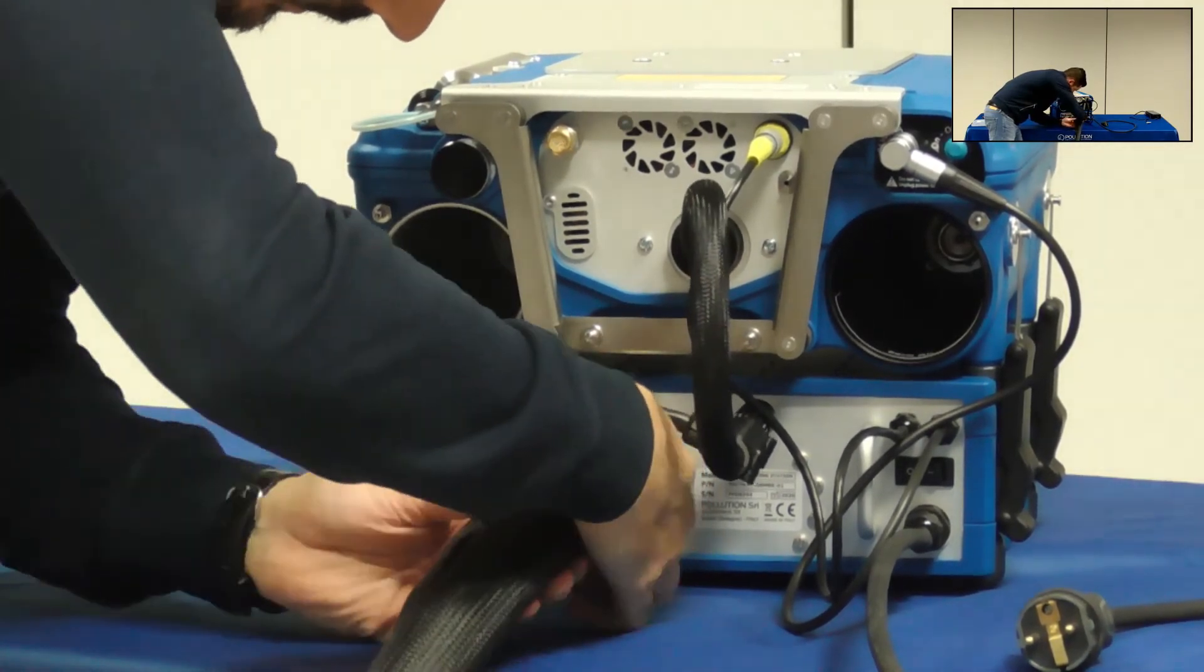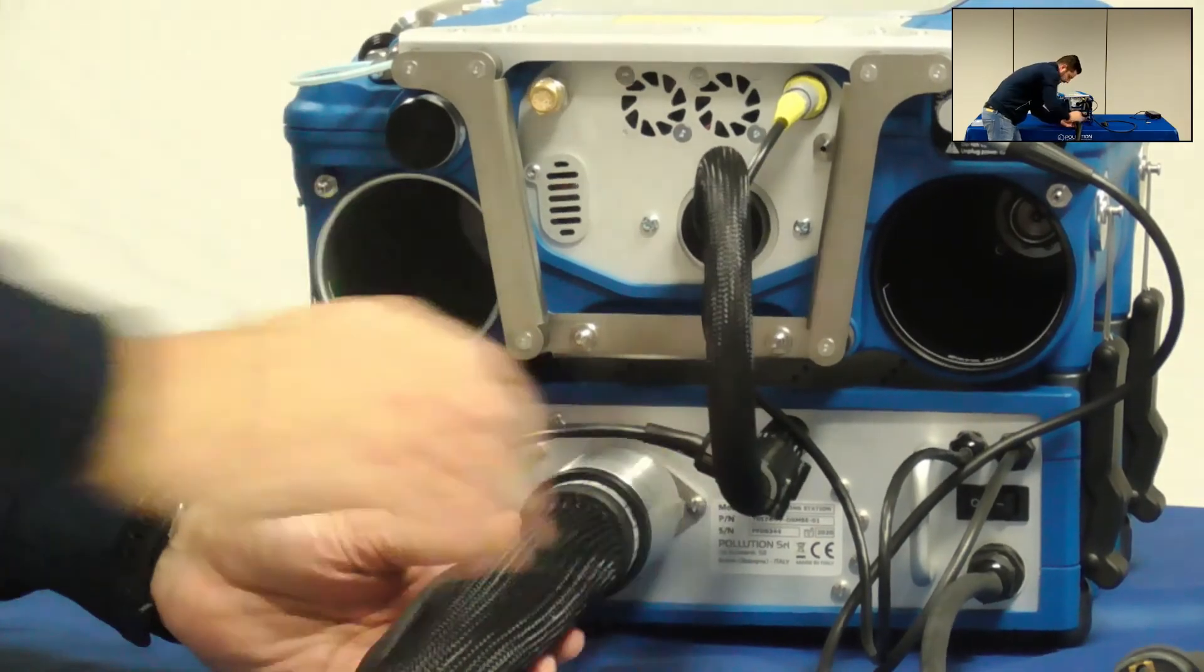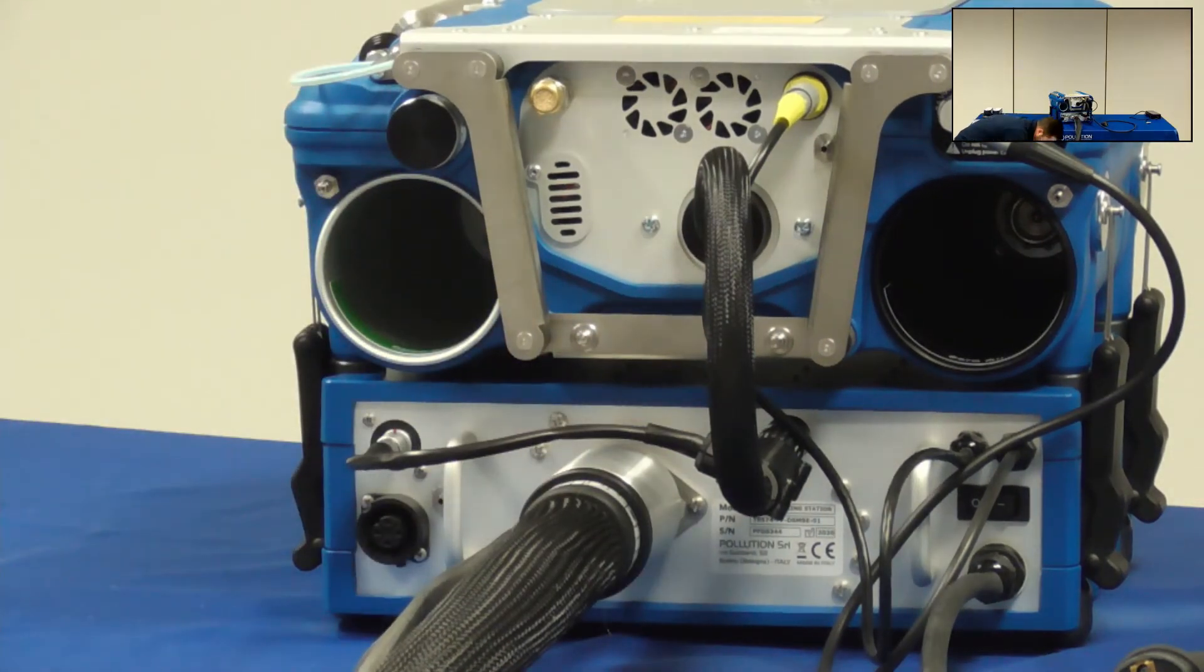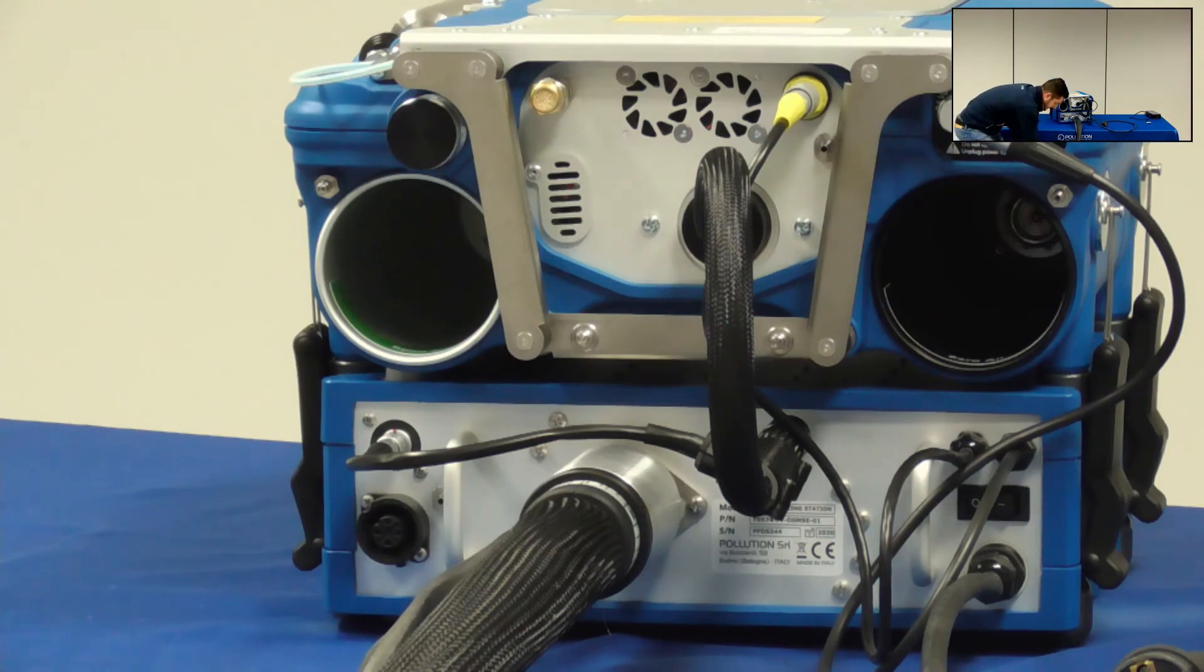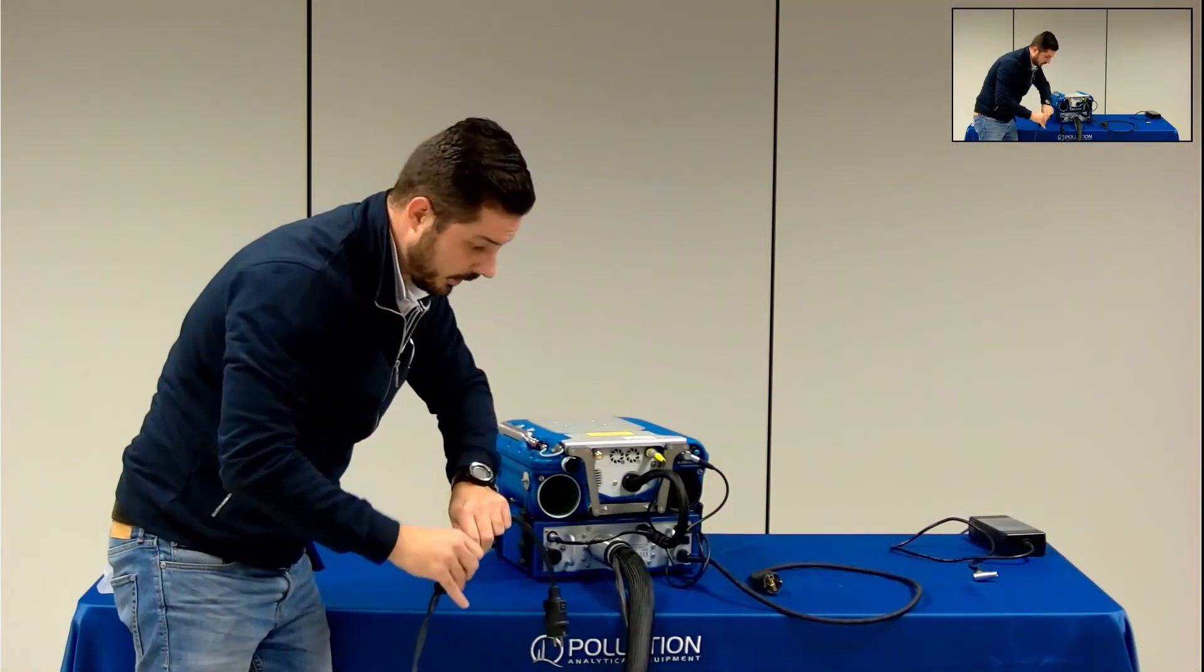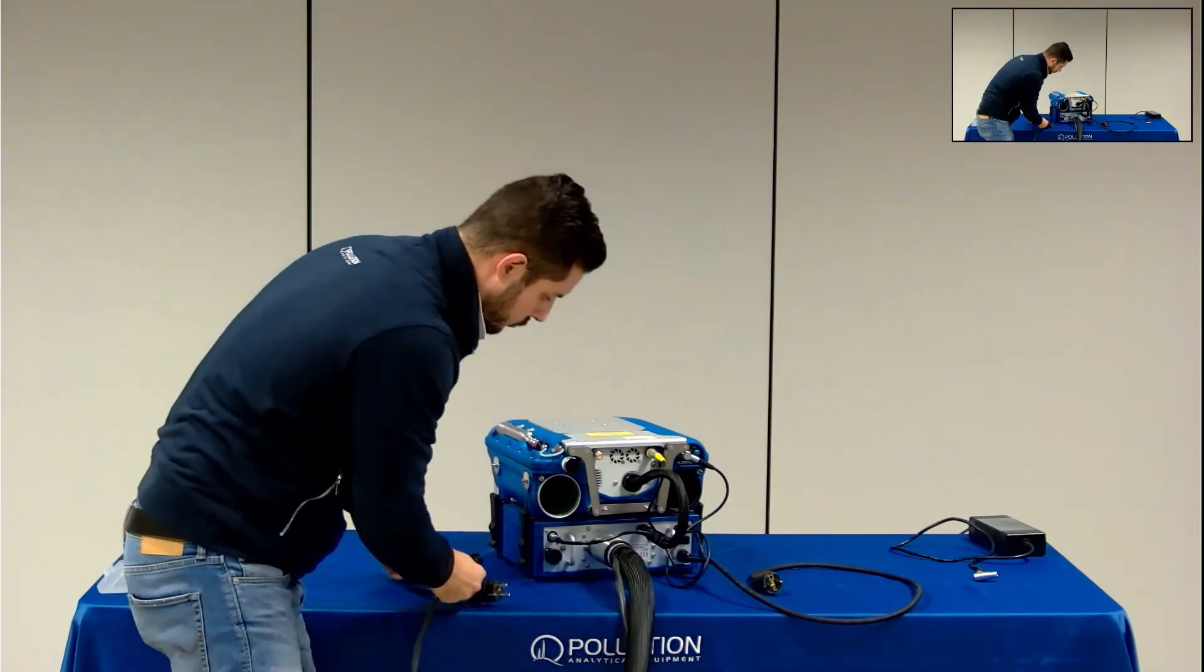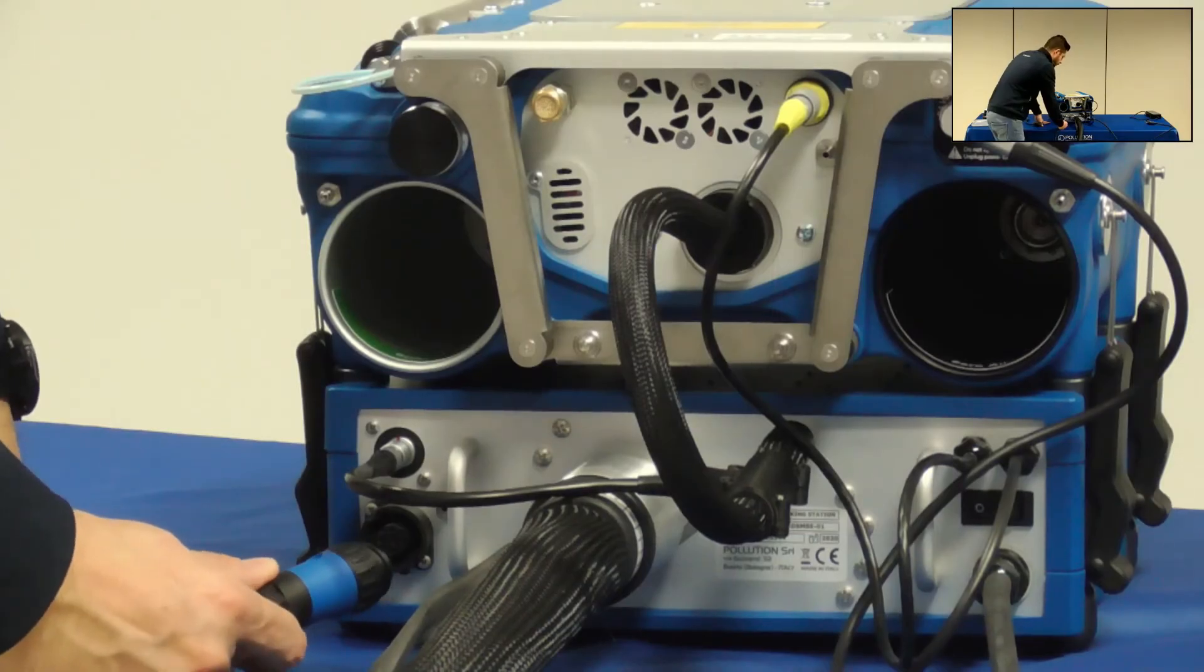After this is done, you can take the power cable of the sampling system and plug it in its appropriate spot. First you need to disconnect it from the Shuko cable and then put it here.